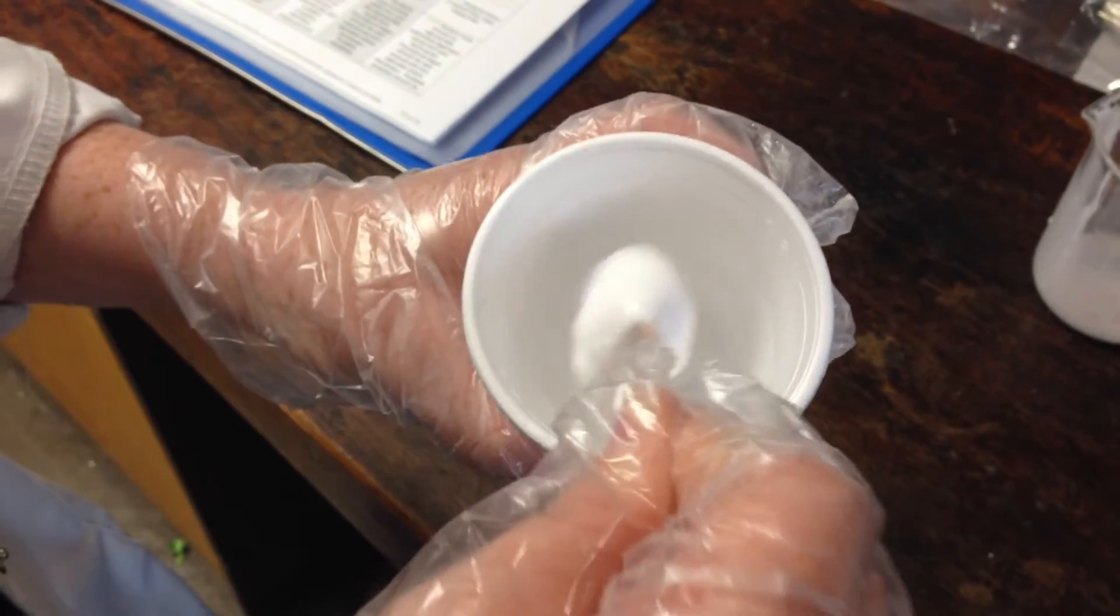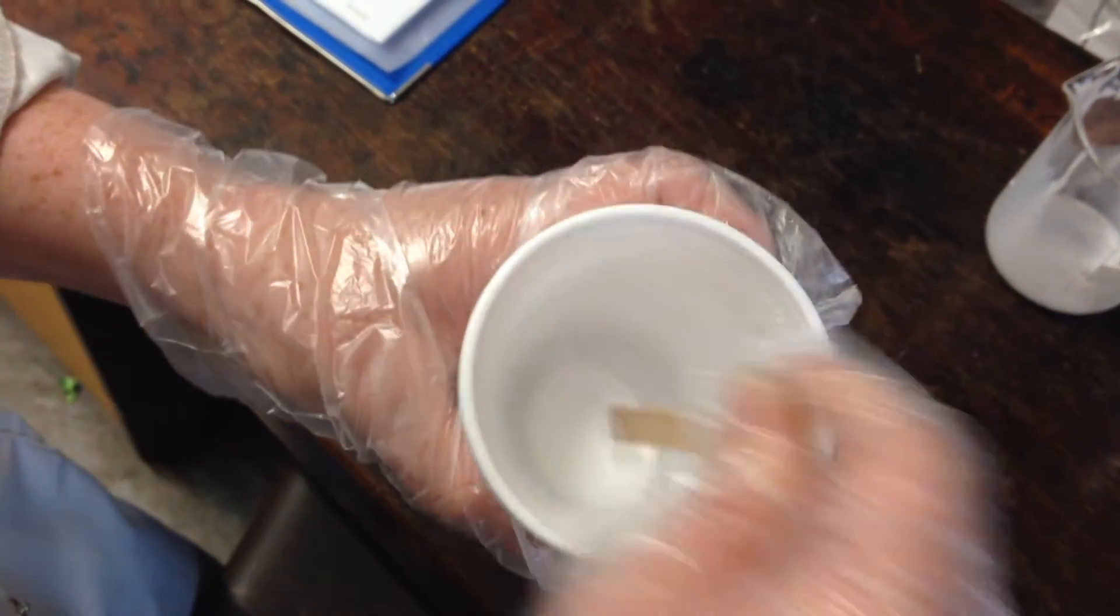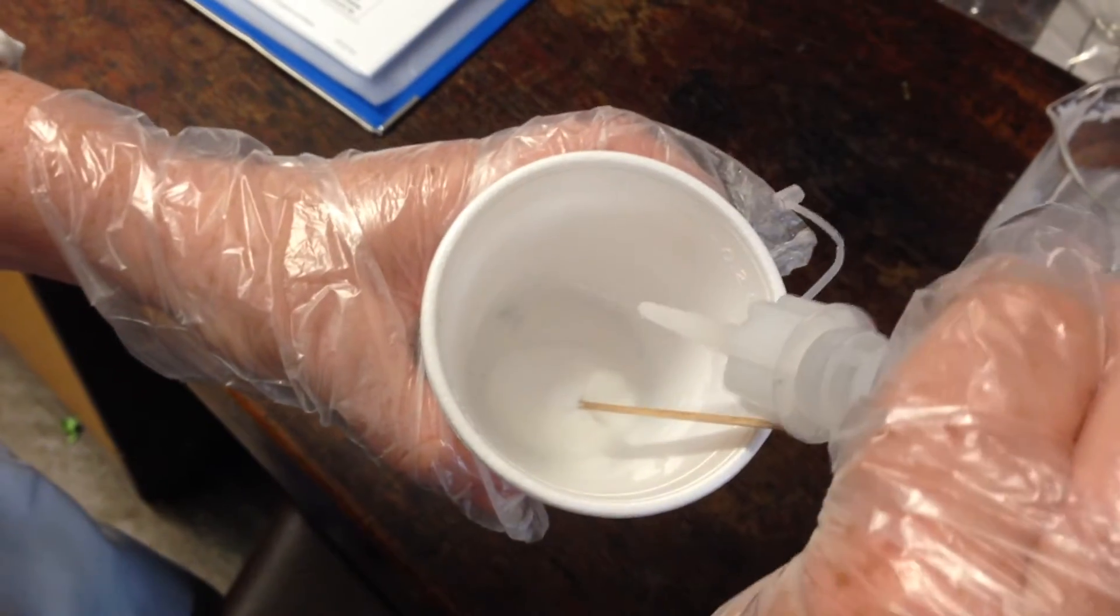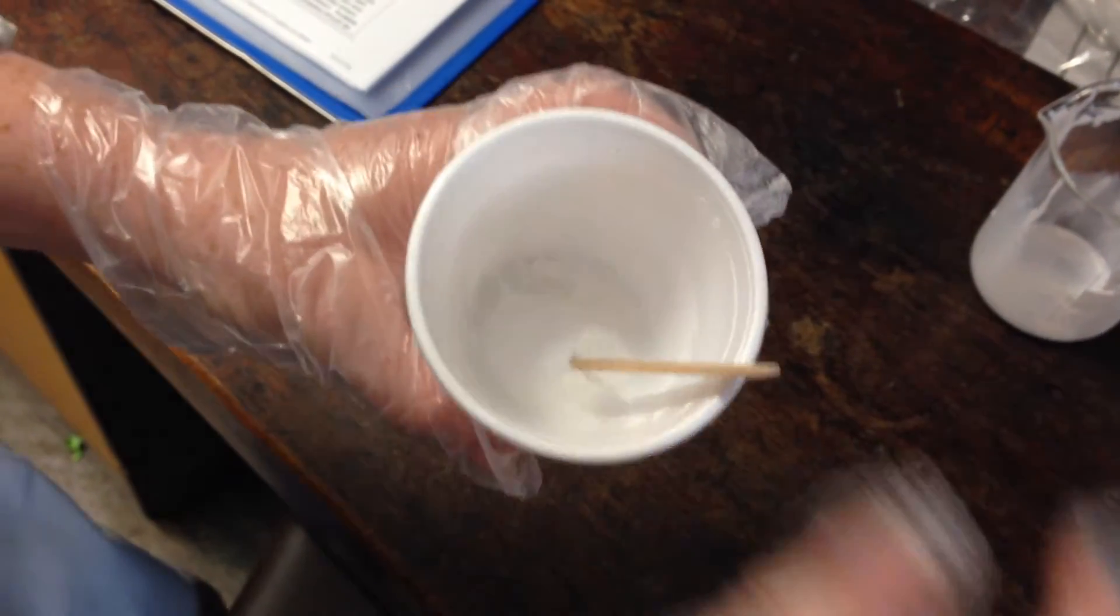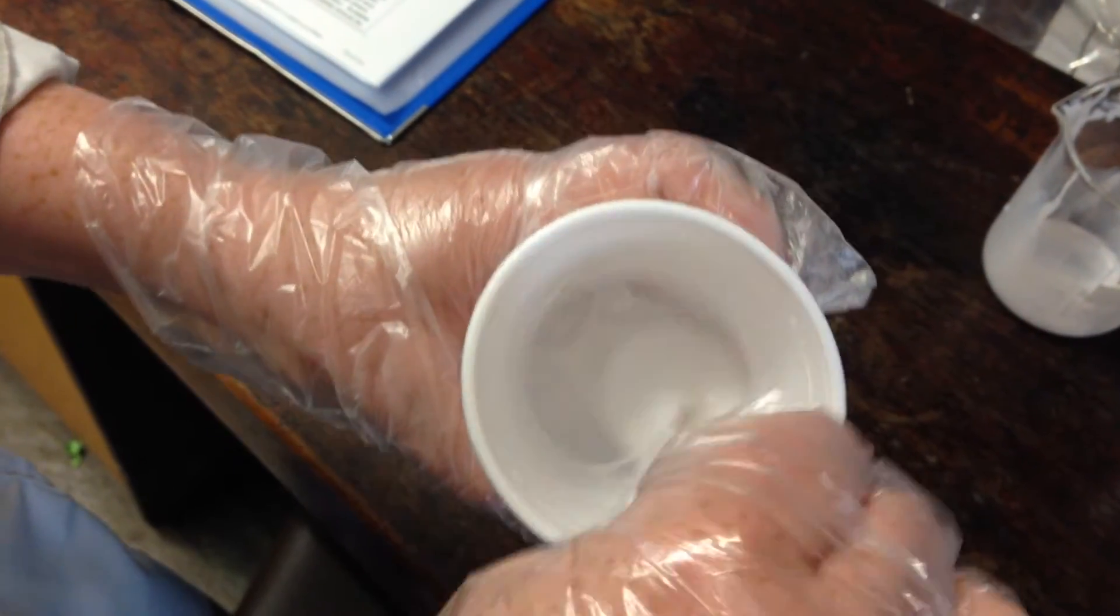You can see this is really starting to solidify now. So as this solidifies, the PVA glue, as you saw, is quite runny, quite slimy, quite slippery. This is starting to solidify a lot now. Hopefully you can see that it's becoming quite gloopy.